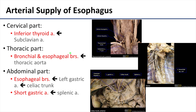There is a robust arterial supply associated with the esophagus, with various sources from very different areas. The cervical part of the esophagus is supplied by branches of the inferior thyroid artery — remember that the inferior thyroid artery is a branch of the first part of the subclavian artery. The thoracic part of the esophagus is supplied by visceral branches of the thoracic aorta, such as the bronchial and esophageal branches.